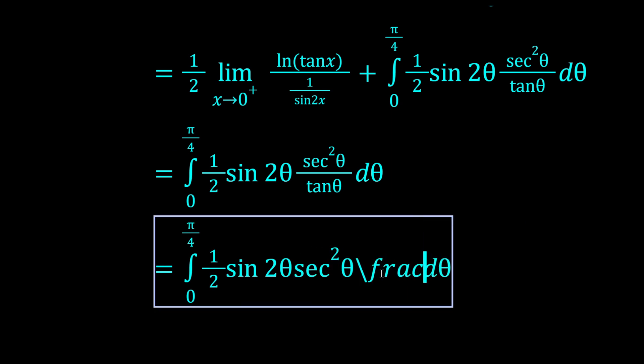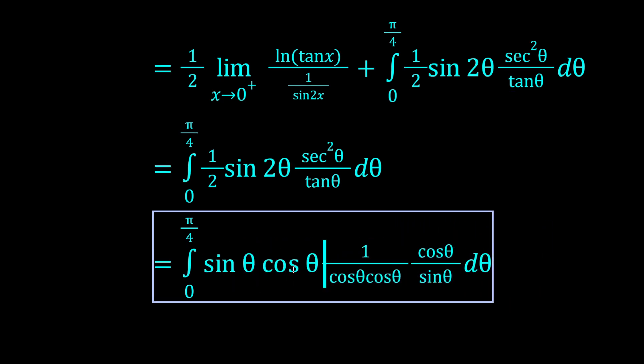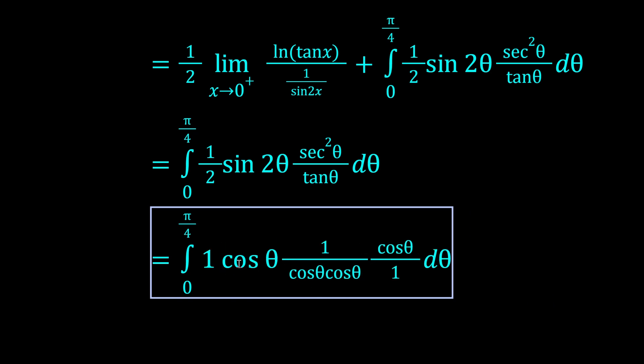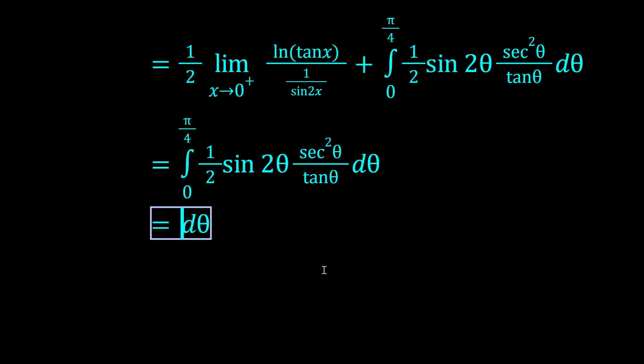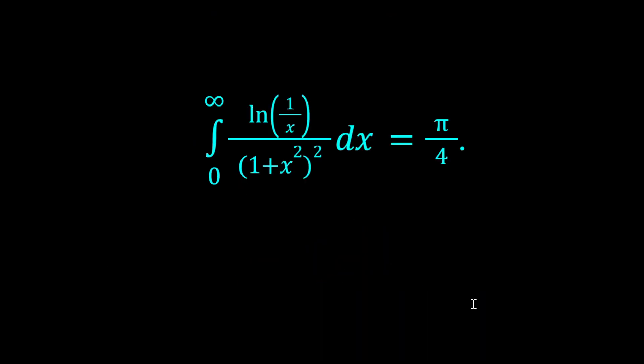Now we just have this thing. Let's try to simplify this a bit. Sec² we can write as 1/(cos θ cos θ). Sin 2θ is 2 sin θ cos θ, right? And we have all of these. We can cancel out a few things. Cancel the sines. Cancel these two cosines. Okay, wait, everything seems to cancel out. We're just left with the integral of 1. Wow, okay, that's pretty nice. So this is just going to give us π/4. And yeah, so there you go. The integral from 0 to infinity of log(1/x) over (1+x²)² is π/4.